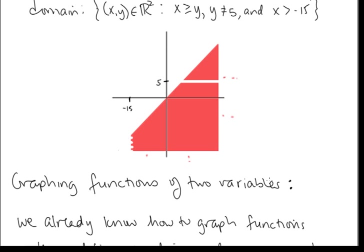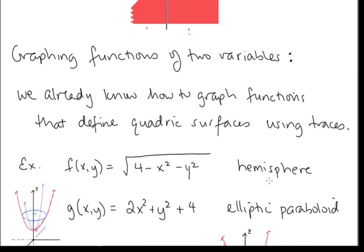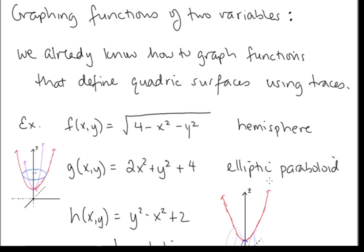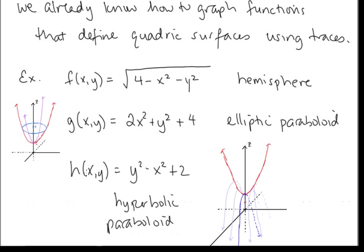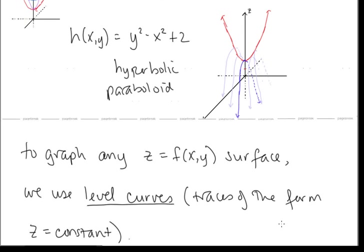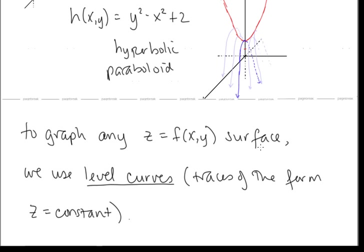Now let's talk about graphing functions of two variables. We already know how to graph functions that define quadric surfaces using traces, as we learned in Lesson 8. For example, g(x, y) = 2x² + y² + 4 is an elliptic paraboloid, and h(x, y) = y² − x² + 2 is a hyperbolic paraboloid. More generally, to graph any surface z = f(x, y), we use level curves — traces of the form z = constant.